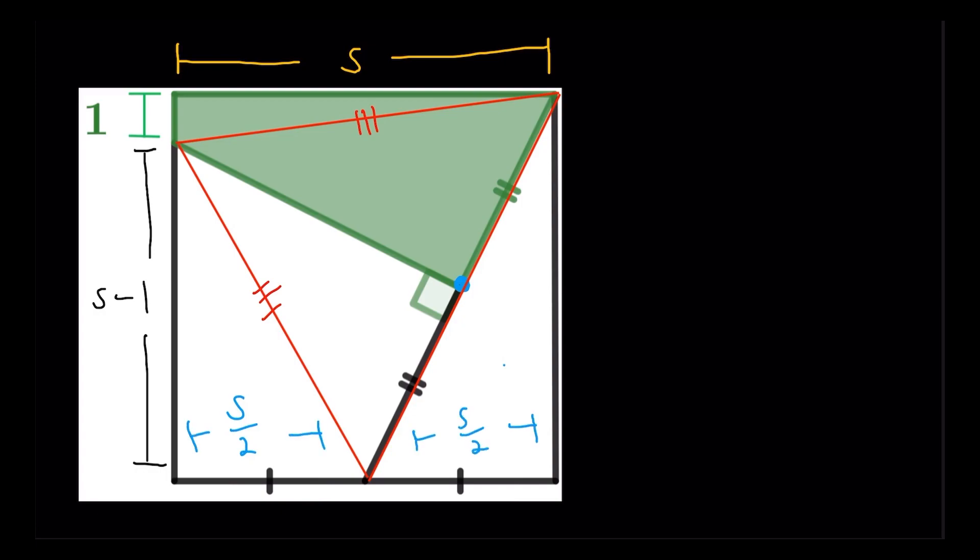Now, what's important about this is that I can use the Pythagorean theorem now in this right triangle. Obviously, we have a square here, so obviously this angle should be right. Now, the hypotenuse, essentially, I could use this portion. So take a look, I'm going to form the Pythagorean theorem. So s minus one squared plus s over two squared.